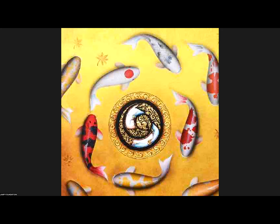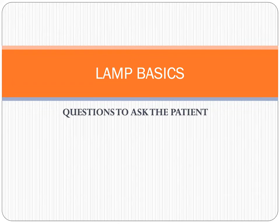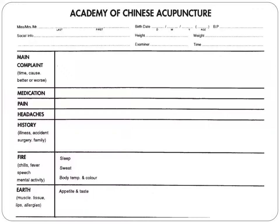Let us call once again Sir Dino for his presentation. This time, he will talk about questions to ask the patient. We continue with Lamp Basics — questions to ask the patient. We have here the Academy of Chinese Acupuncture form. We need to fill up the complete data of the patient with their name, last name, first name, birth date, blood pressure, social info, height, weight, the examiner, and the time.